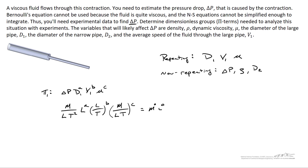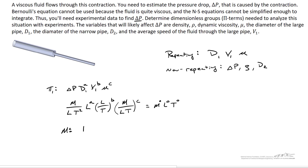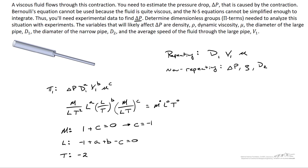We want this combination to be dimensionless: mass to the zero, length to the zero, time to the zero. Working with mass: one plus C equals zero, so C equals negative one. Working with length: negative one plus A plus B minus C equals zero. Working with time: negative two minus B minus C equals zero. Making the substitution for C, we find B equals negative one.